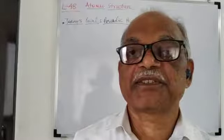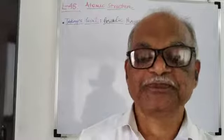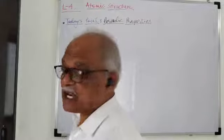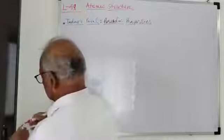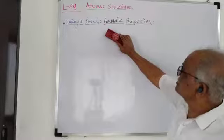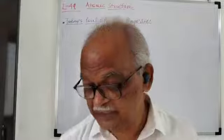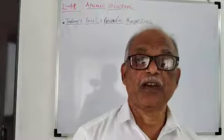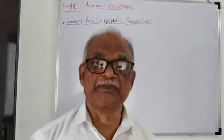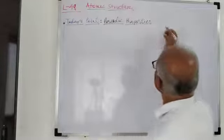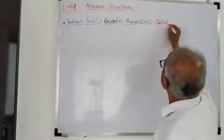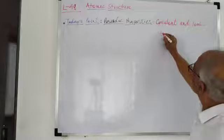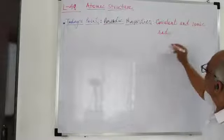Welcome to this channel, Chemistry Made Easy by Dr. Ashok Muri. We were discussing atomic structure, and this is the next part. In this atomic structure, we were discussing periodic properties, and up to this time we have seen the first two properties: ionization energy and electron affinity. Today we will discuss covalent and ionic radii.